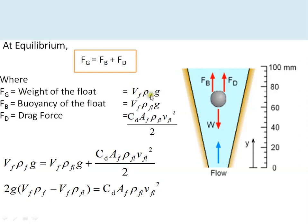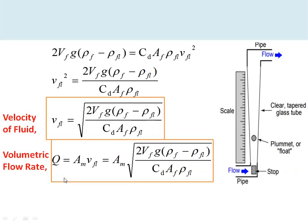The weight of the float equals its mass times g, where mass equals volume of the float (V_f) times density of the float (ρ_f). The buoyancy force equals V_f times the density of the displaced fluid times g. The drag force equals C_D times A_f times the fluid density times V_F² divided by 2, where C_D is the drag coefficient, A_f is the float area, and V_F is the fluid velocity. Solving the equilibrium equation gives V_F as the square root of [2·V_f·g·(ρ_float − ρ_fluid) / (C_D · A_f · ρ_fluid)]. The volumetric flow rate Q equals the tapered annular area at that position times V_F.